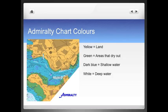Admiralty chart colours are quite specific. Yellow equals land, the green area denotes areas that dry out, dark blue is shallow water, whereas white is deep water.